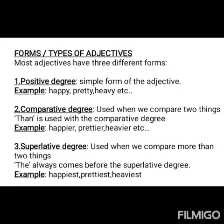The next topic is types of adjectives, also called forms of adjectives. Most adjectives have three different forms: positive, comparative, and superlative. Positive is the simple form of the adjective — we give a simple description of a noun. Words like happy, pretty, heavy, etc. are examples of the positive degree.